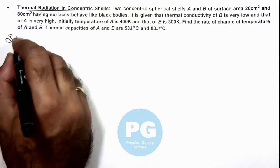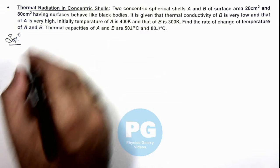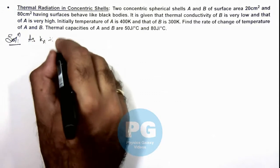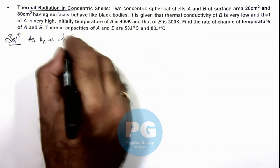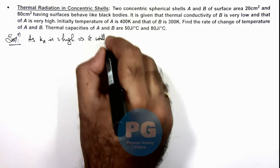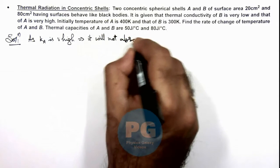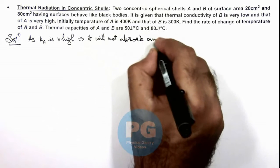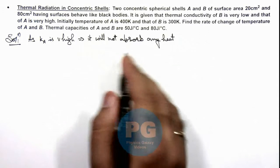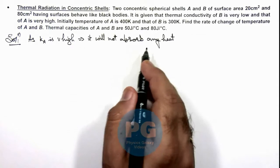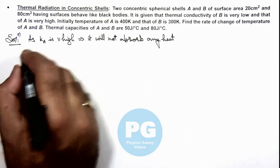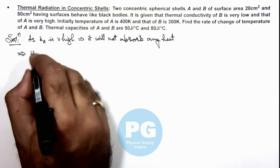Since the thermal conductivity of A is very high, we assume it will not absorb any heat. As soon as some heat is incident onto the body, it conducts the heat which is falling on it. So this implies we can write directly the heat loss by A.